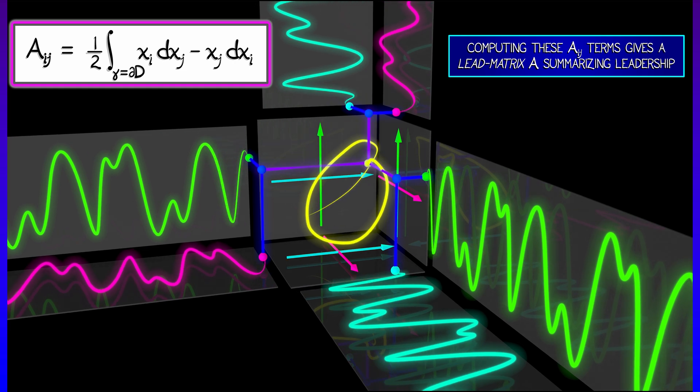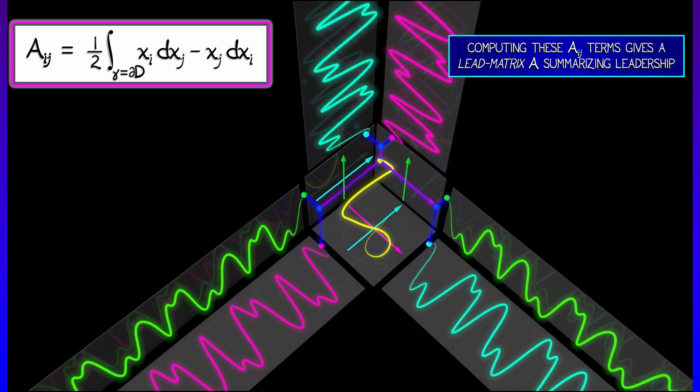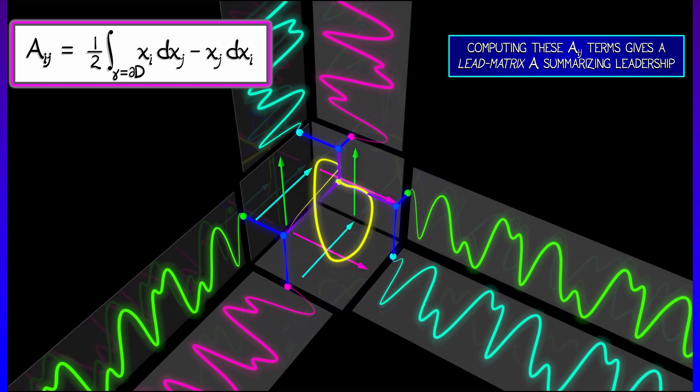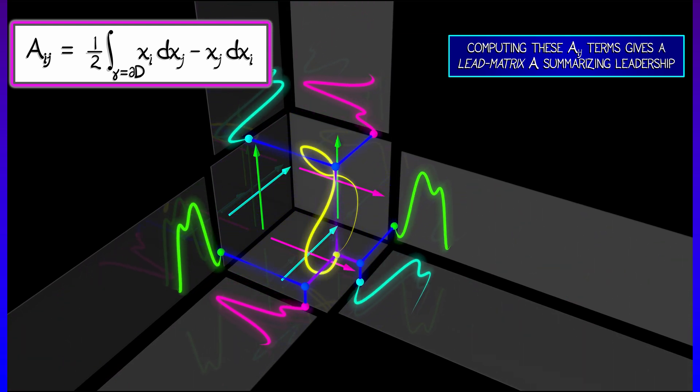Now, that lead matrix is going to have some interesting structure along the diagonal. It's going to be zero. Let's see what happens when you reverse i and j. Oh, that's right. We're going to get an anti-symmetric matrix. That's pretty cool.